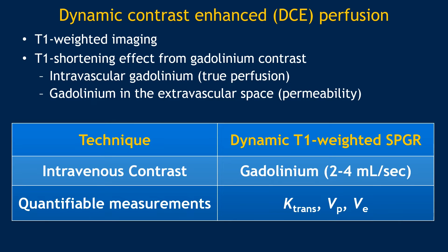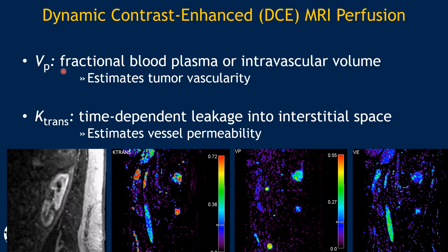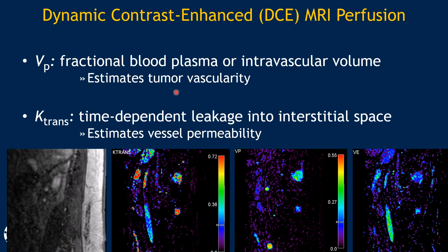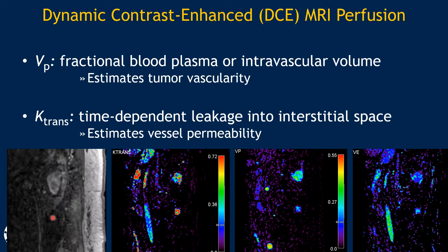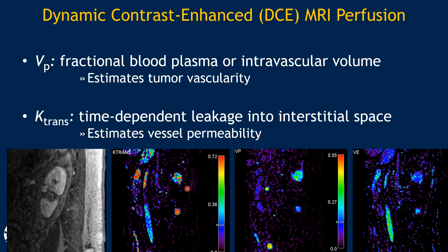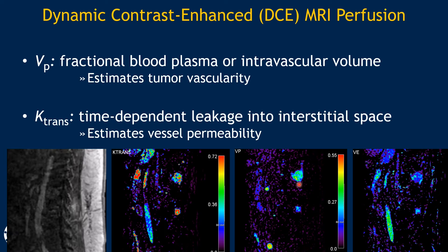Dynamic Contrast Enhanced Perfusion, or DCE, is a T1-weighted imaging technique where you utilize gadolinium contrast to create a T1 shortening effect within the mass or vascular lesion. Tumors have a lot of intravascular perfusion, and gadolinium causes this T1 shortening. You inject gadolinium contrast at 2–4 mL per second utilizing a dynamic T1-weighted SPGR technique, and obtain quantifiable measurements called K-trans, VP, and VE. With DCE perfusion, we can obtain VP — fractional blood plasma or intravascular volume — which estimates tumor vascularity, and K-trans, which estimates vessel permeability. Here, we're obtaining perfusion imaging of the lumbar spine showing two lesions with increased K-trans and VP, consistent with a very vascular tumor.